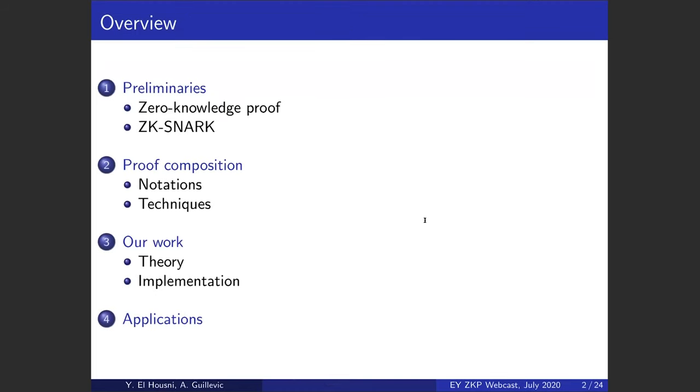Just to give some context, we'll be talking about zero-knowledge proofs and more precisely ZK-SNARKs and proof composition of those ZK-SNARKs, both from a theoretical point of view and implementation point of view. And then we will be mentioning some applications that might be interested in this work.